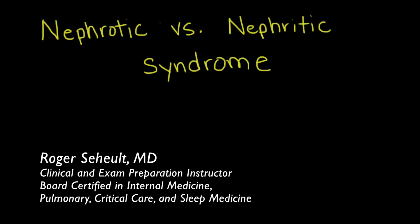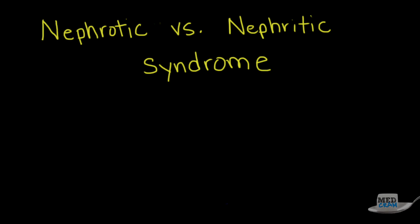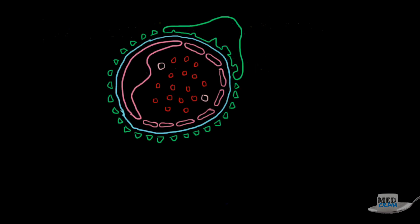Welcome to another MedCram lecture. We're going to talk about nephrotic versus nephritic syndrome. These are both syndrome types that occur in the kidney, and the question is what's the difference between them and why do they happen in the first place? To understand that, we really need to get into the pathophysiology of how these syndromes are different.